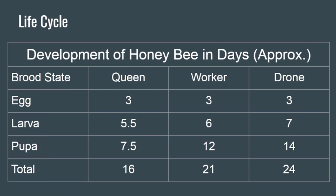The queen spends five and a half days as a larva, a worker about six, and a drone about seven days. For the pupa stage there's a large difference: the queen spends just slightly more than a week — about seven and a half days — as a pupa; the worker a full 12 days; and the drone two solid weeks as a pupa under the cap. Total time to development for a queen is 16 to 18 days, for a worker it's usually around 21 days, and a drone takes 24 days from egg to adult.